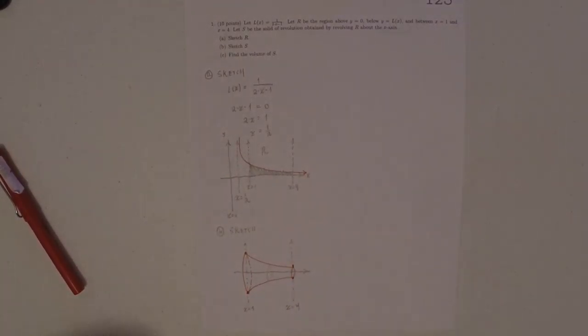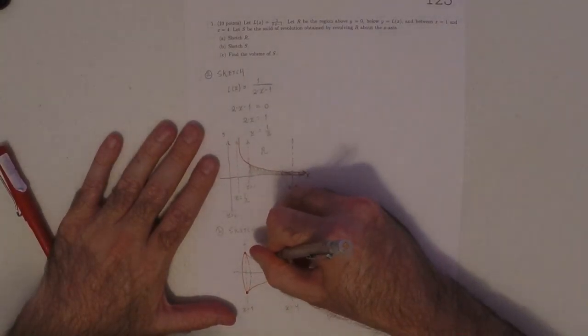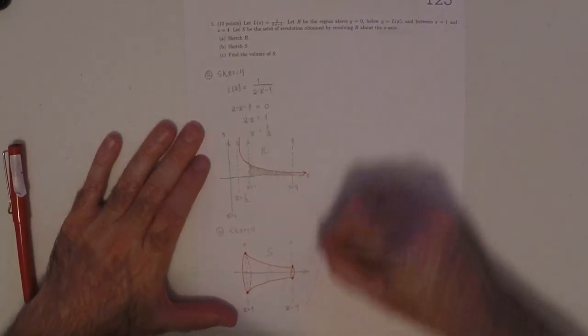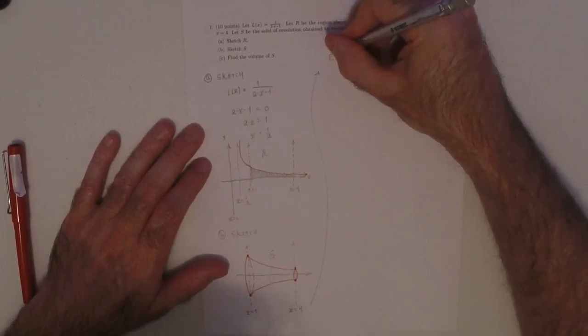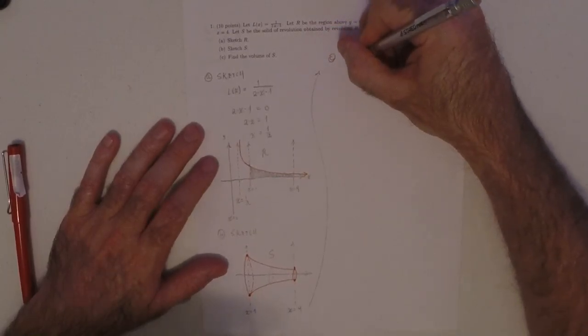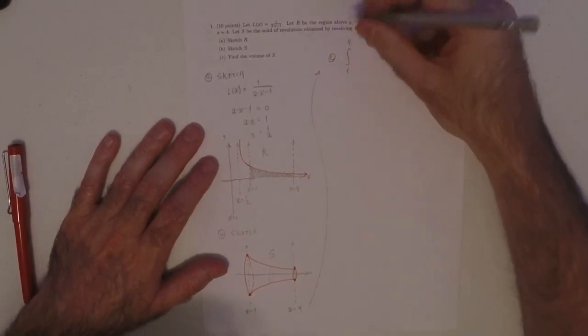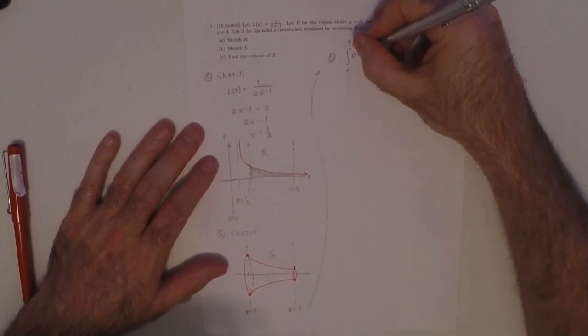All right. So, you know, this is a solid. Then, we're asked to compute the volume. Well, this would be integral 1 to 4 pi.